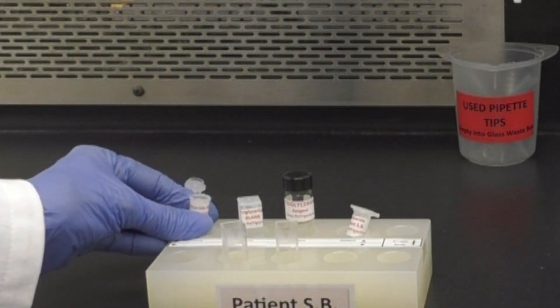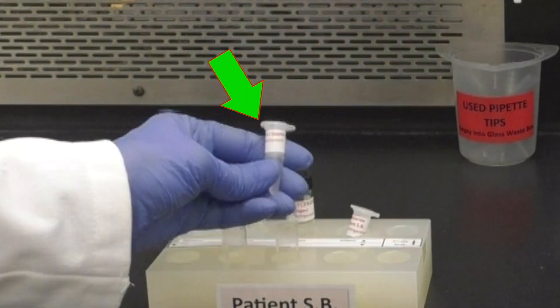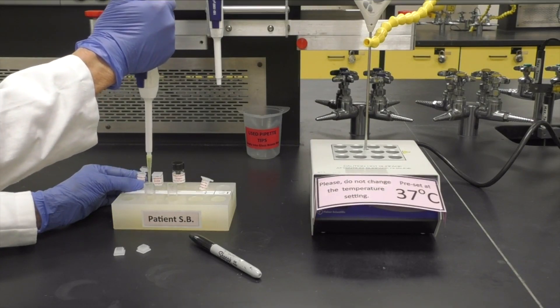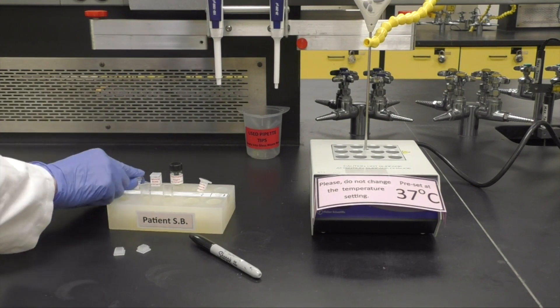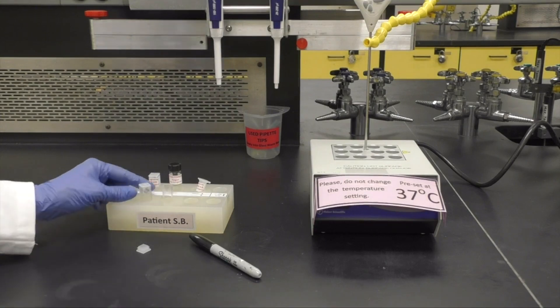Next, open the triglyceride standard microfuge tube by pushing up on the little tab in the front and add 20 microliters to the cuvette labeled as standard. Cap it and place it in the dry bath incubator. Allow it to warm for 10 minutes.